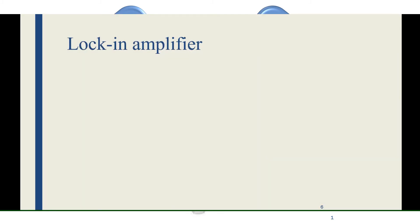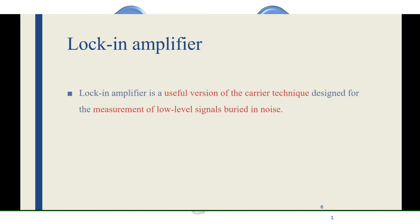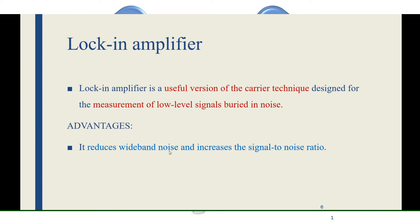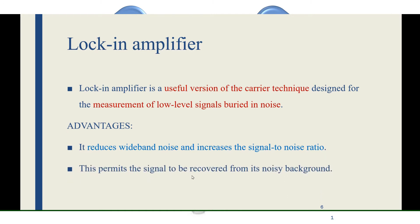The advancement of the carrier amplifier is called the lock-in amplifier. It is a very useful version of the carrier technique and is used for measurement of low-level signals buried in noise. Sometimes the signal may be mixed with noise, and the lock-in amplifier helps in those cases. Its main advantage is that it reduces wideband noise and increases the signal-to-noise ratio by suppressing noise and increasing signal strength. A second advantage is that it permits the signal to be recovered from the noise background, so the original signal can be recovered easily.